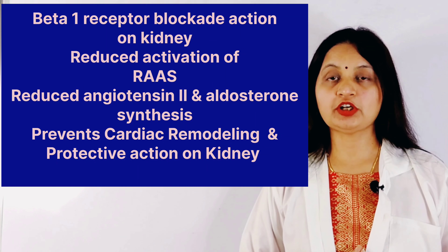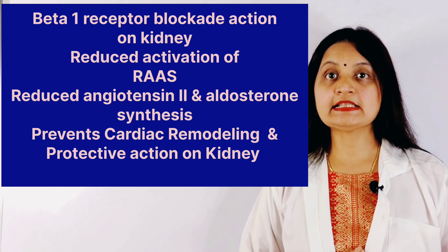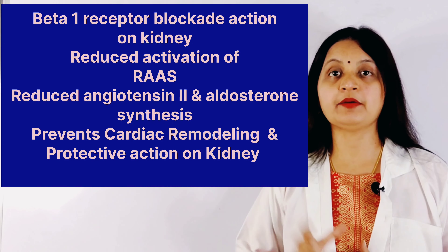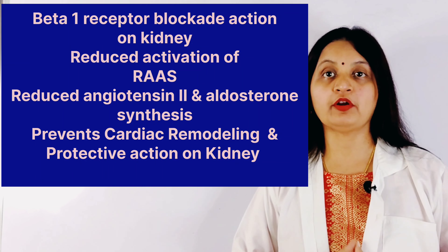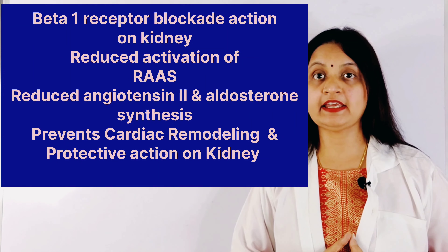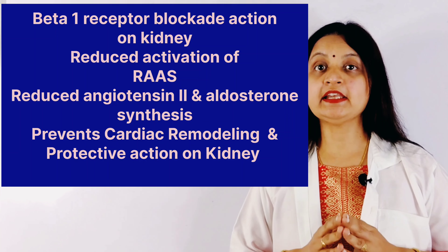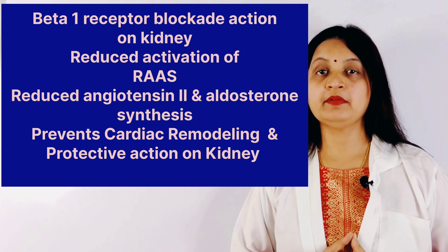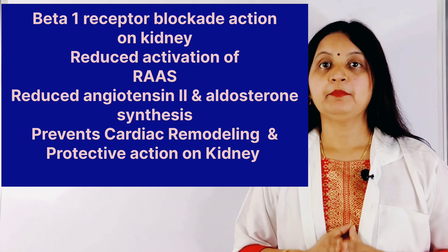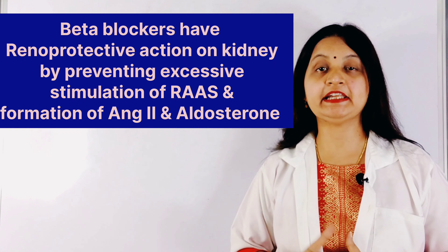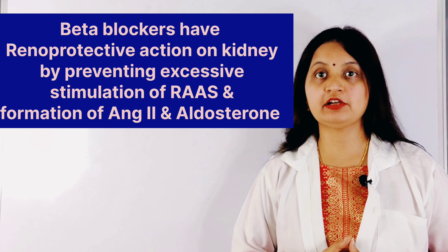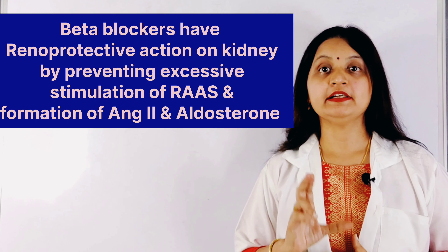Next, beta 1 receptor blockade action on the kidney. Stimulation of beta 1 receptors results in increased renin release. Increased renin results in increased stimulation of the renin-angiotensin-aldosterone system, resulting in excessive formation of angiotensin 2 and aldosterone. Excessive angiotensin 2 and aldosterone action has a damaging effect on cardiac myocytes resulting in cardiac remodeling. Therefore, beta blockers by inhibiting the activation of the renin-angiotensin-aldosterone system prevent cardiac remodeling and also have a renoprotective action on the kidney, which is useful in the treatment of diabetic nephropathy.